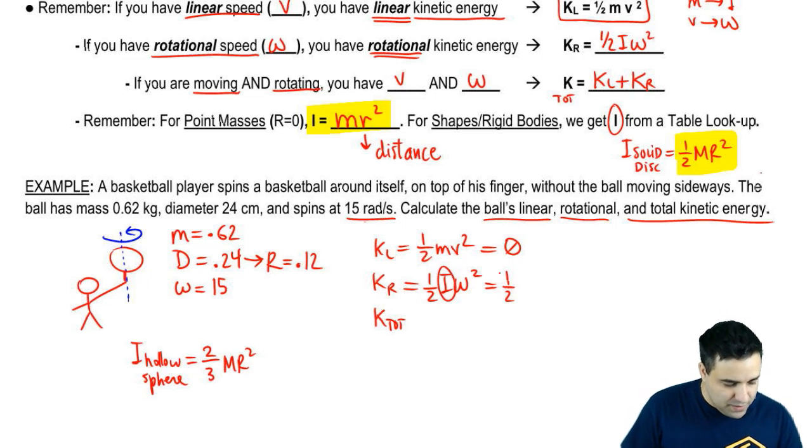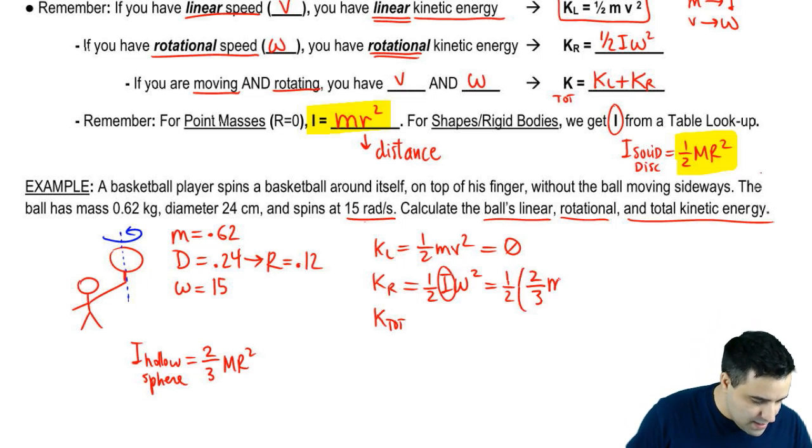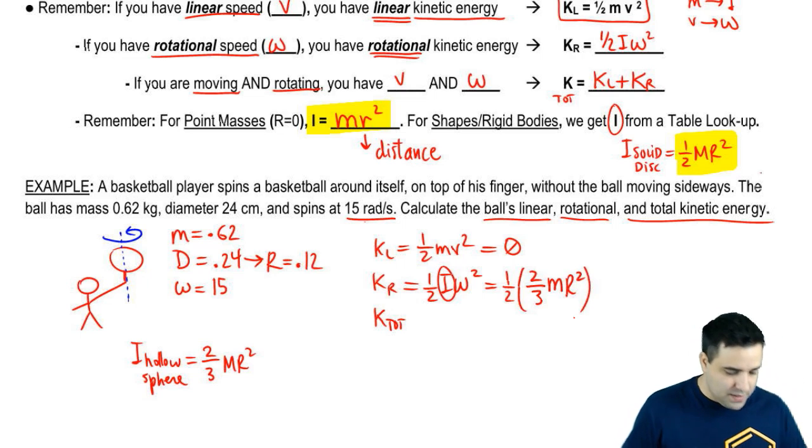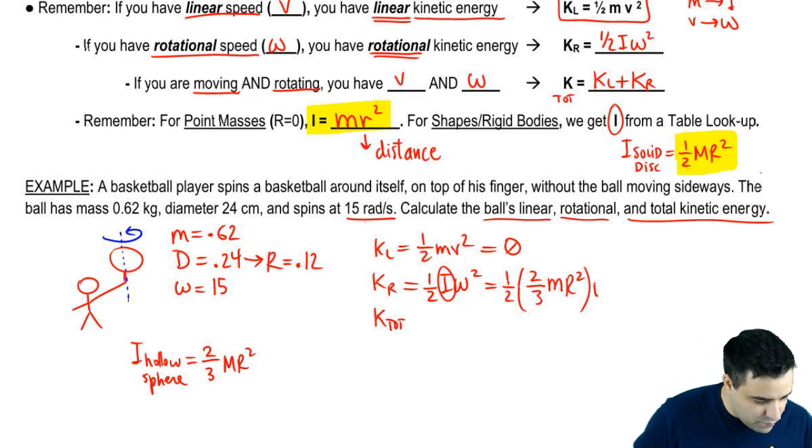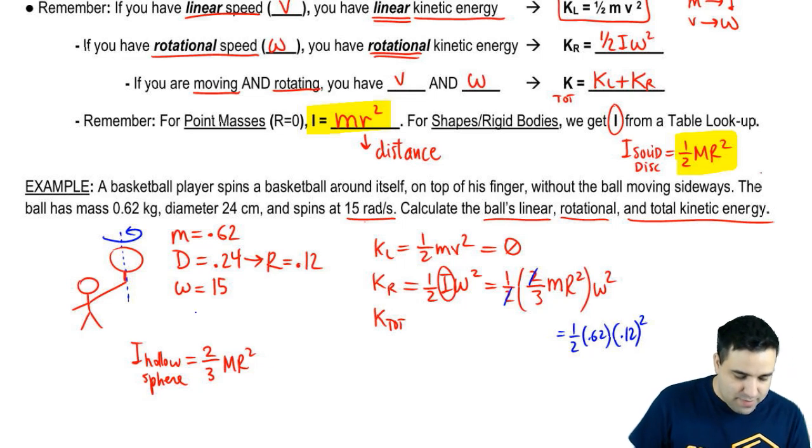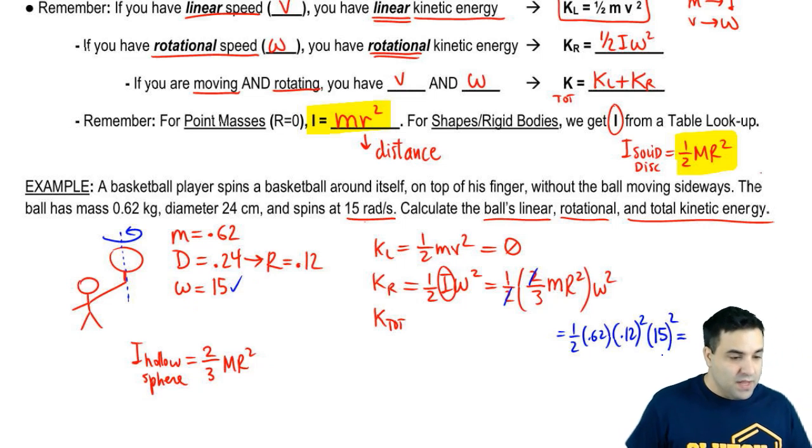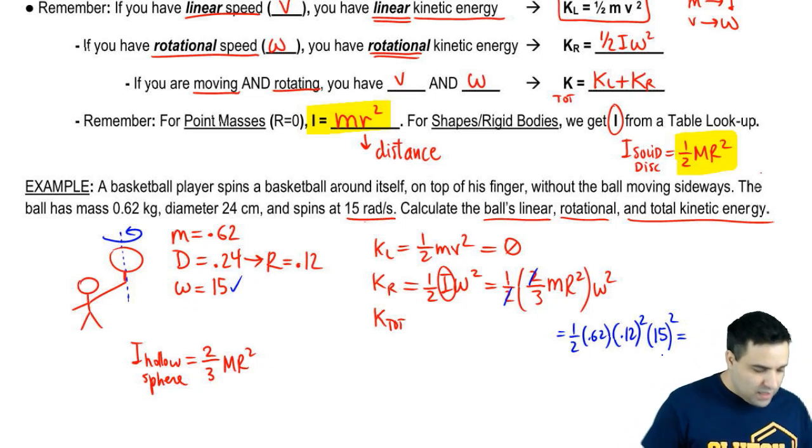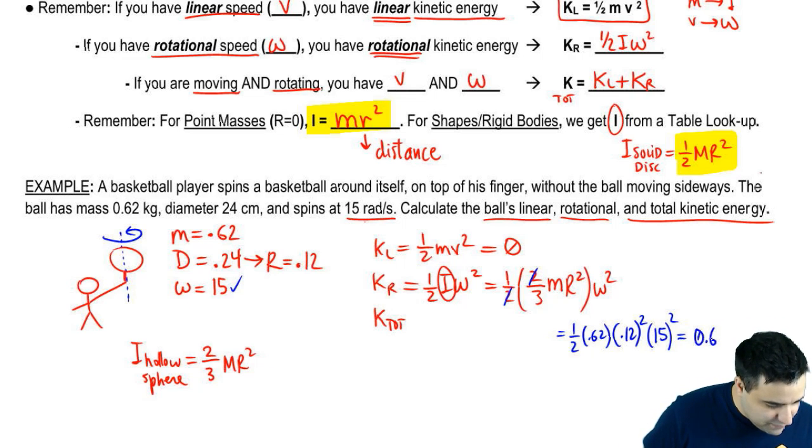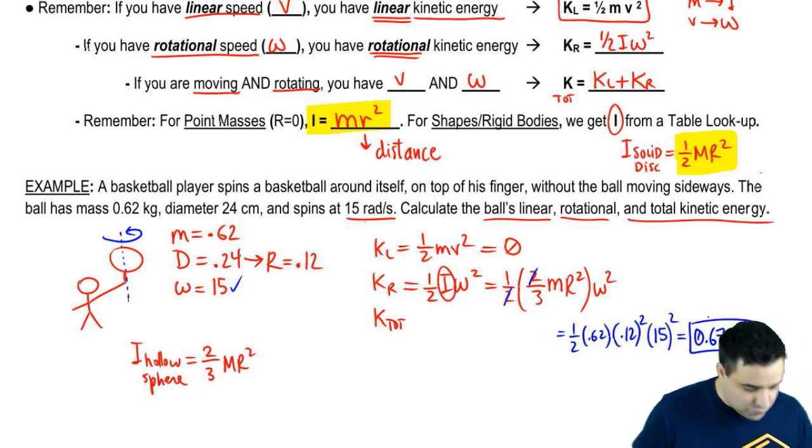So what I'm going to do is plug that in here. Two thirds m r squared, and then omega squared, which I have. So now we can just plug in numbers. The two cancels with the two, and I'm left with one third. The mass is 0.62. The radius is 0.12 squared. And omega is 15, 15 squared. And if you multiply all of this, you get 0.67 joules.